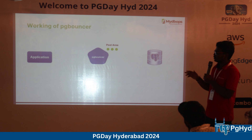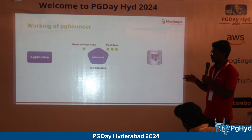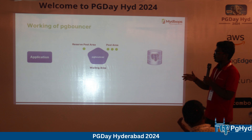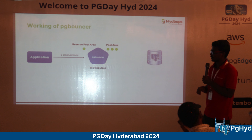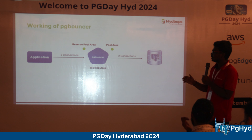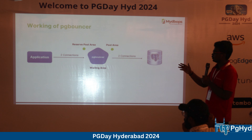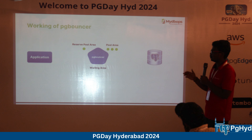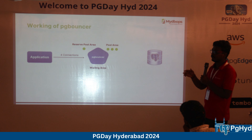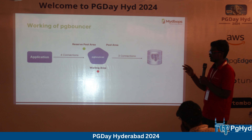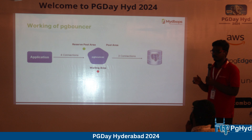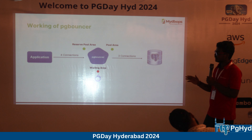Other important configuration variables include: max_client_conn — the maximum number of client connections allowed to the PG Bouncer instance; default_pool_size — the maximum number of server-side connections allowed per pool; min_pool_size — the minimum number of connections always maintained in the pool; reserve_pool_size — additional connections available during traffic surges, used after the reserve_pool_timeout (default ~10 seconds) expires; and the default port is 6432.